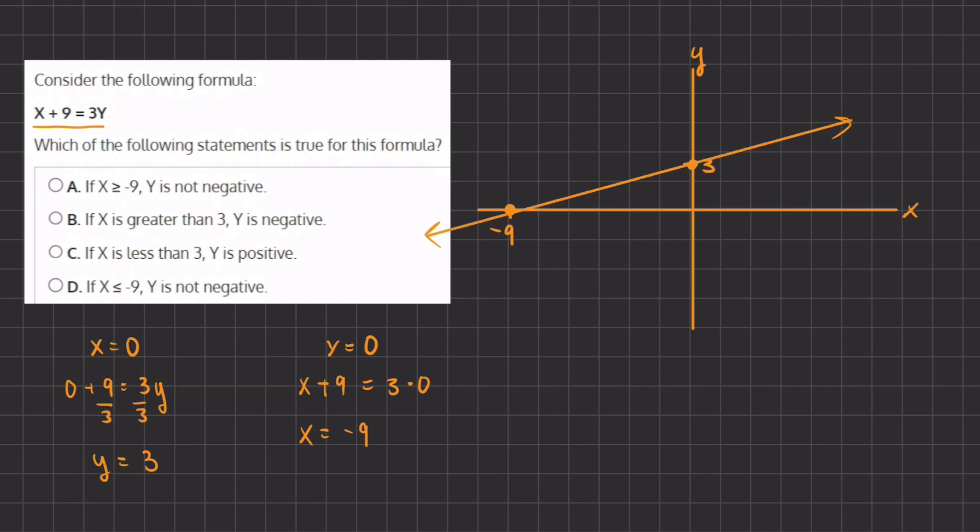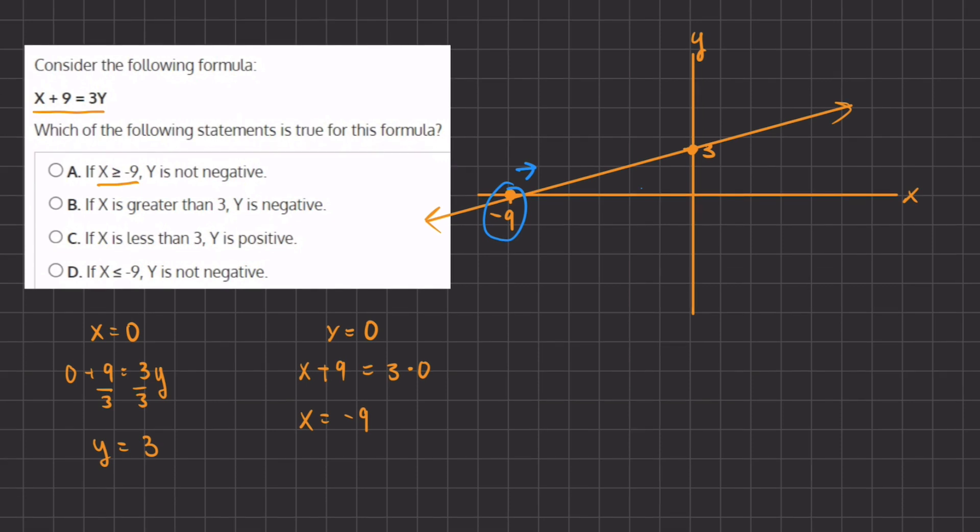All right, so now that we have our linear function, let's take a look at our answers. Answer A states that when x is greater than or equal to negative 9, so that is right over here, and greater than is this direction, then y is not negative. Well, this seems to be correct because all the y values seem to be positive, and at this point where x equals negative 9, the y value is 0, so that is not negative nor positive, and therefore A is the correct answer.